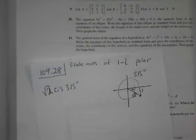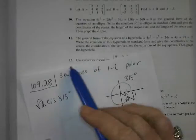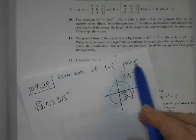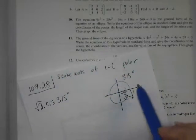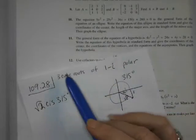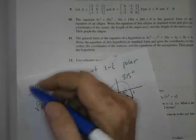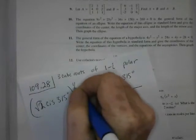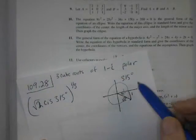Here's lesson 109 number 28. It wants the three cube roots of 1 minus i in polar form. So I need to use polar form so I can use de Moivre on it, like I want to do the de Moivre thing on it.